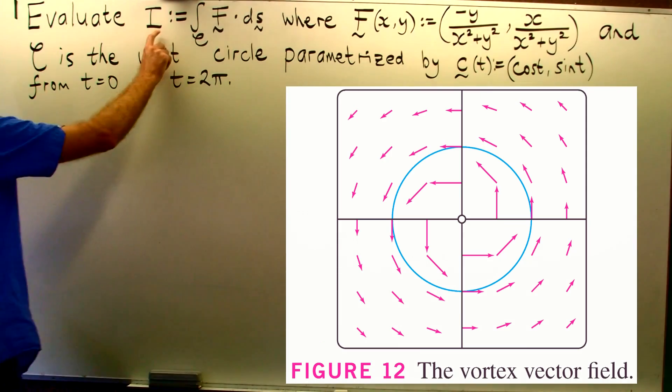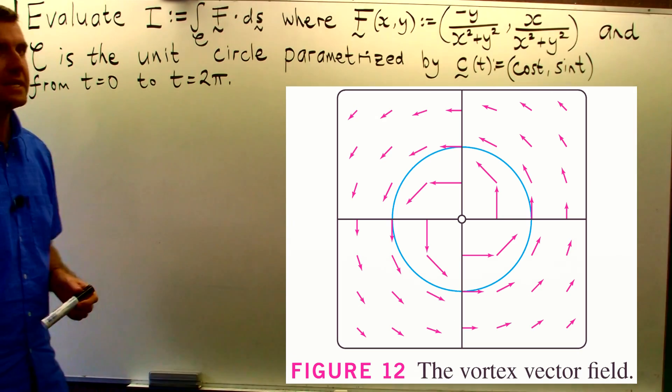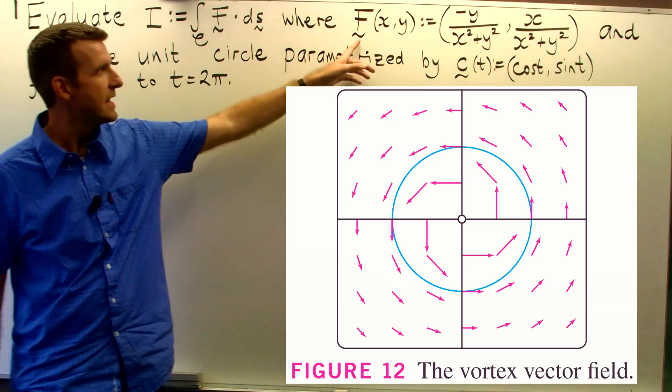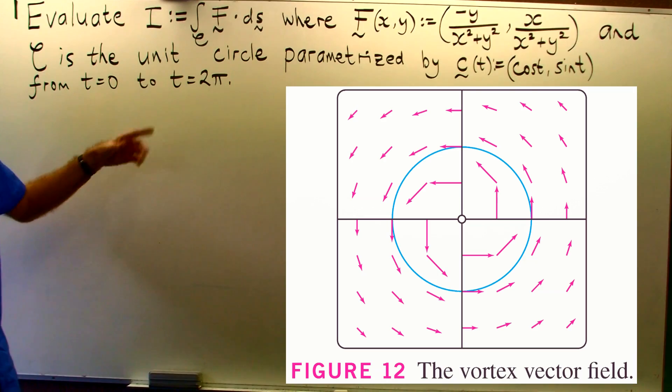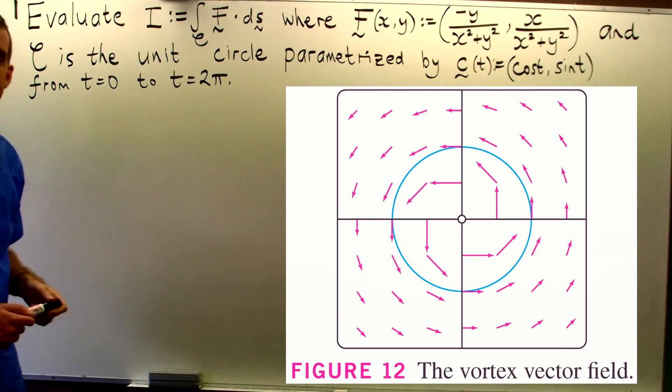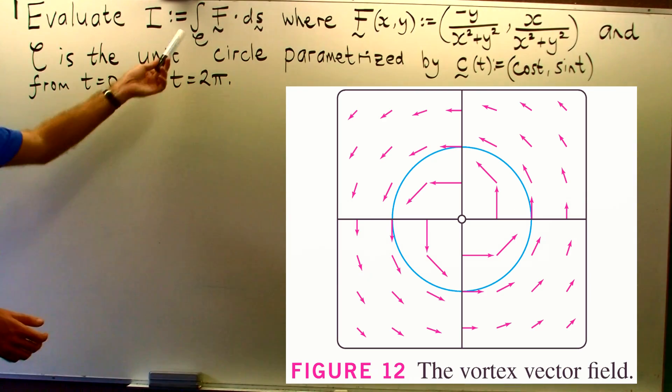Now roughly speaking this line integral gives a measure of how well this vector field aligns with the unit circle parameterized by this vector function c. But the real question is how do we work out this integral?